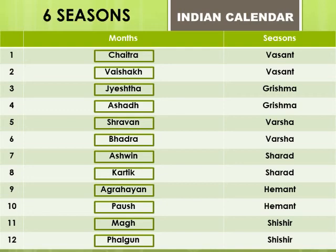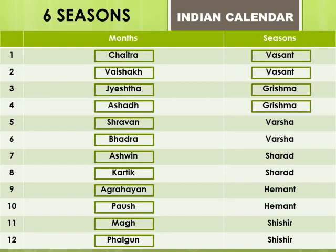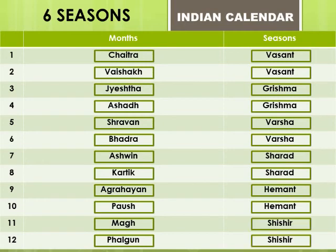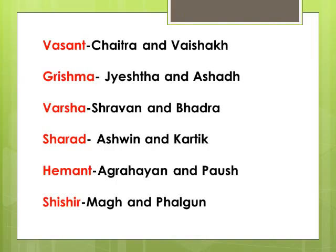So students, there are 6 seasons in the Indian calendar: Vasanth-Rutu, Grishma-Rutu, Varsha-Rutu, Sharath-Rutu, Hemant-Rutu, and Shishir-Rutu.